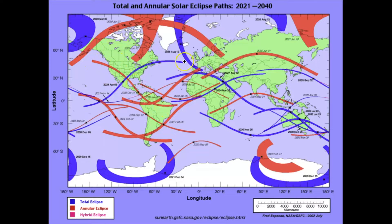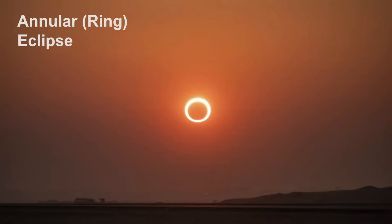Here in North America we're lucky because we have two different types of solar eclipses coming up within a one-year span. Anyone living in Texas is pretty lucky because you're going to be right in the spot you need to be to see both types of solar eclipses. And remember, with the ring eclipse, the moon is farther away in its orbit so it doesn't completely cover the sun and you get this really cool ring effect.